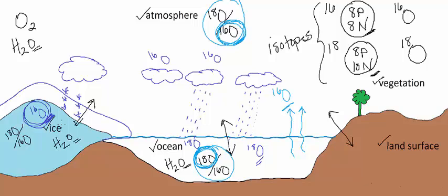So, the larger the ice sheet, the more O16 is locked up in the ice and the more O18 is left behind in our oceans.